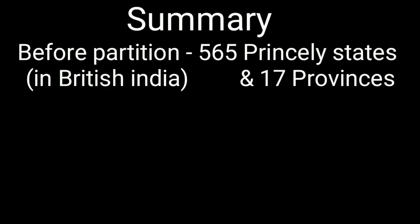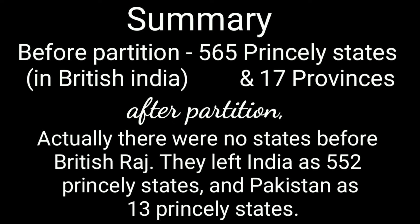Before partition, in British India, there were 565 princely states and 17 provinces. After partition, they left India with 552 princely states and Pakistan with 13 princely states.